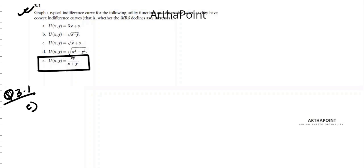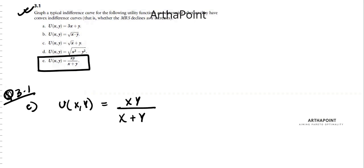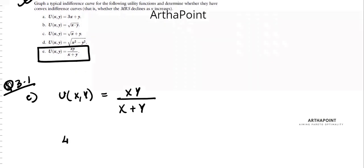In 3.1 part e, let's have a look at this question. My utility function is given as xy upon x plus y. This is the graph or typical indifference curve for it, so let's keep the utility at 4.